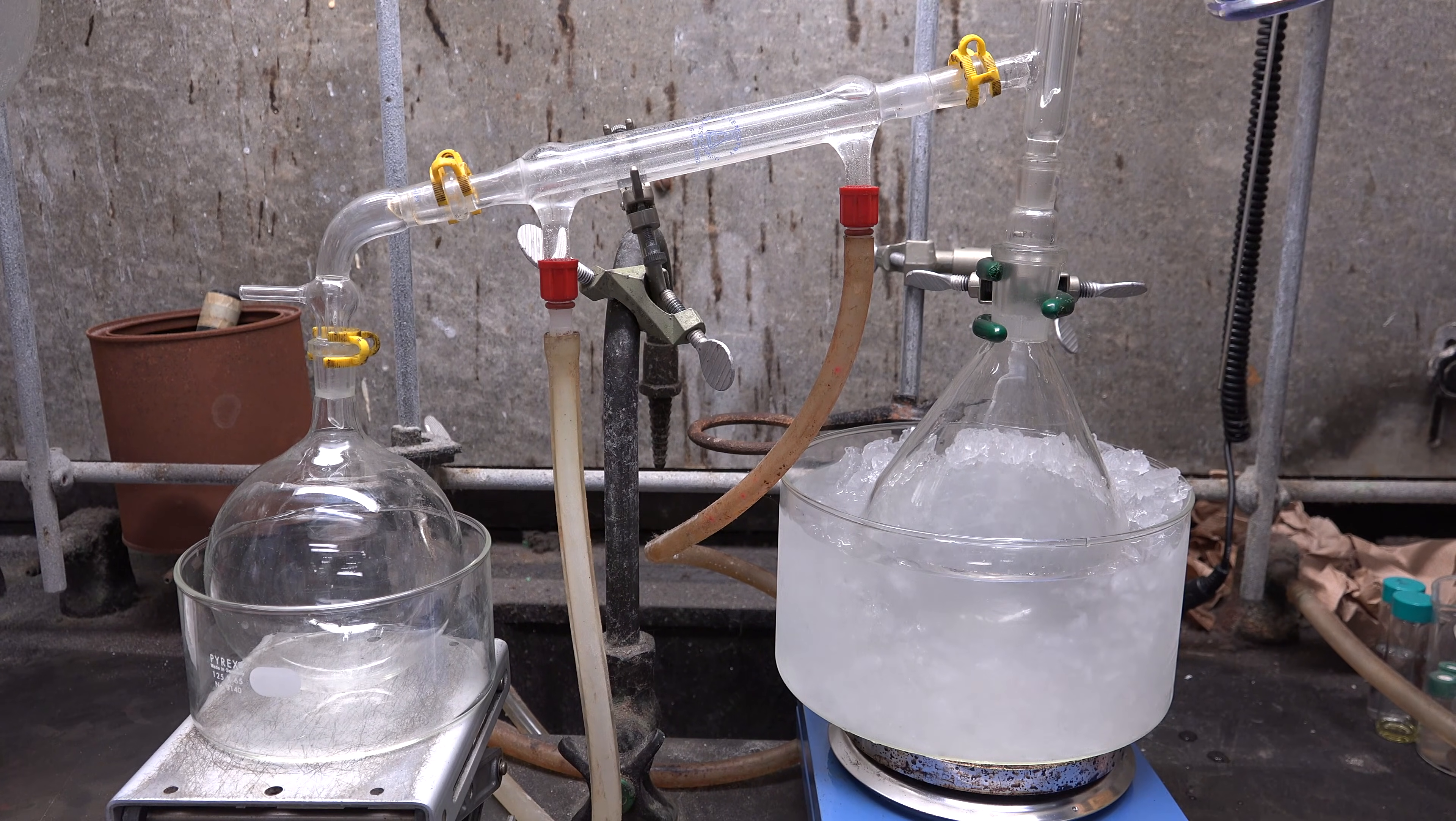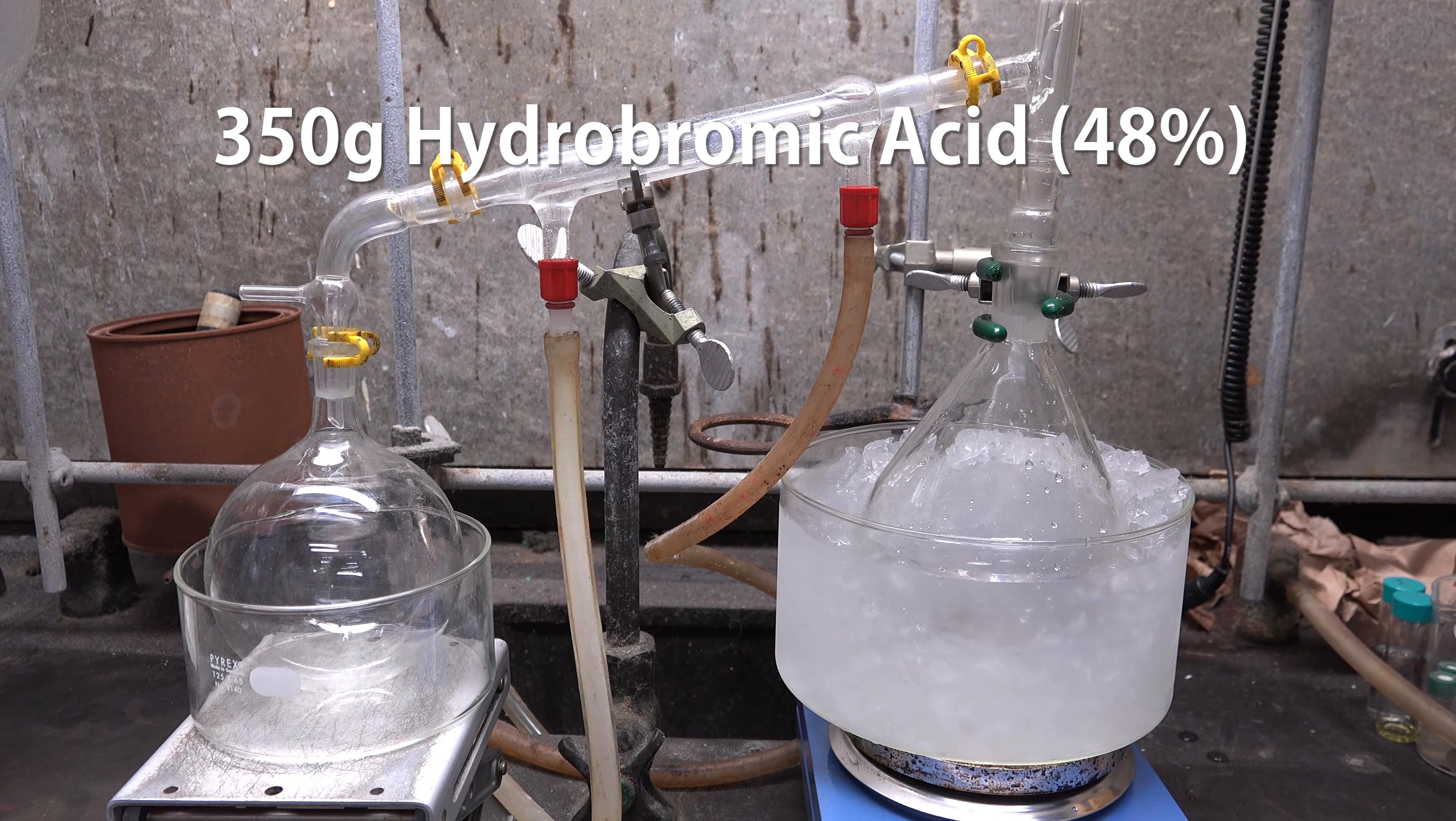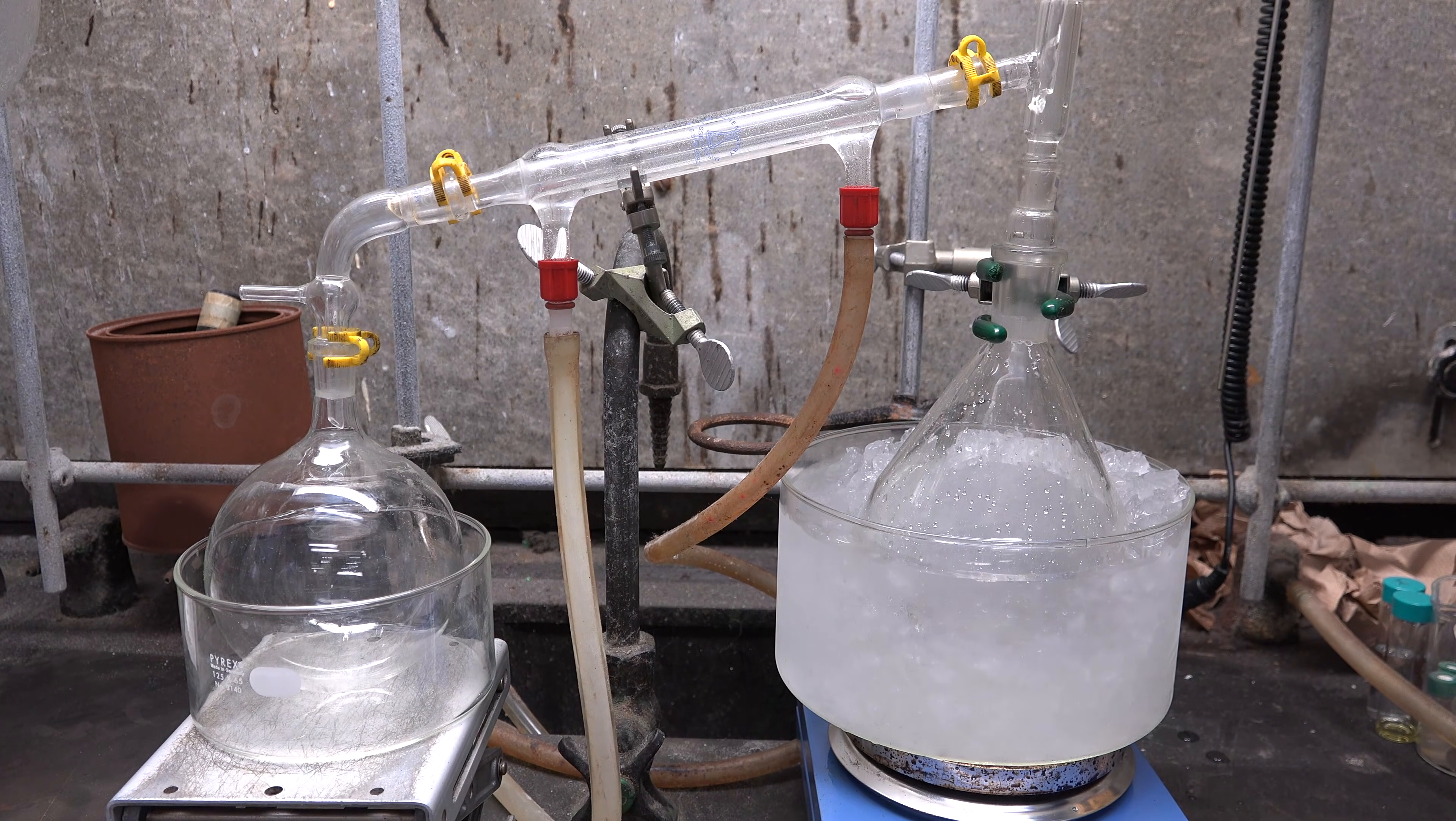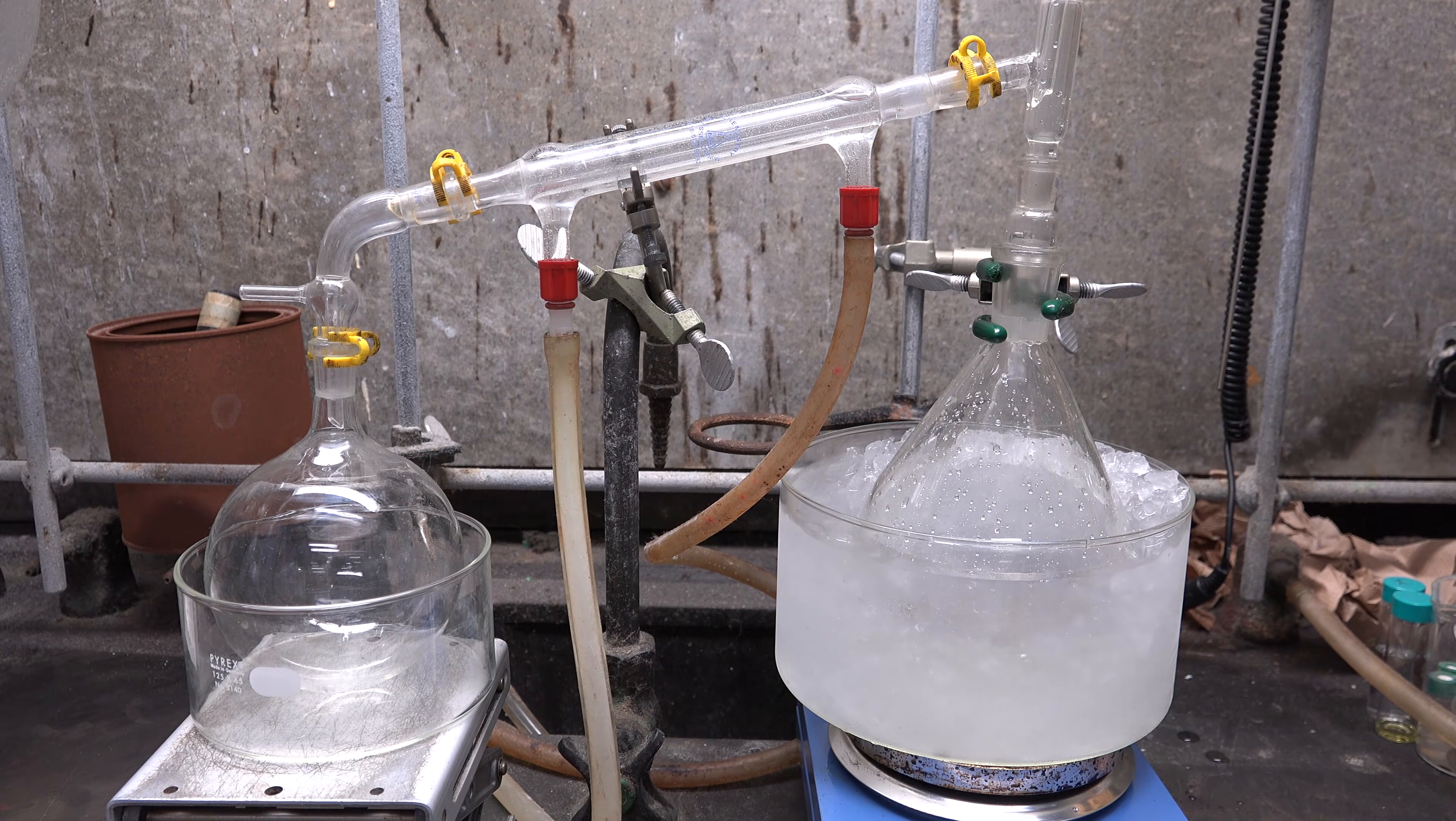Once it's packed we add in our bromide ion source. In this case about 350g of 48% hydrobromic acid. We actually showed how to make hydrobromic acid in a previous video. You can check the video description for the links.